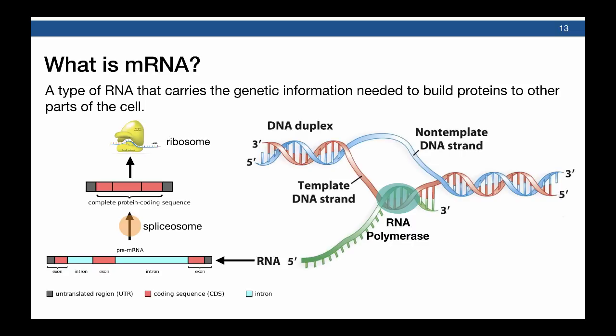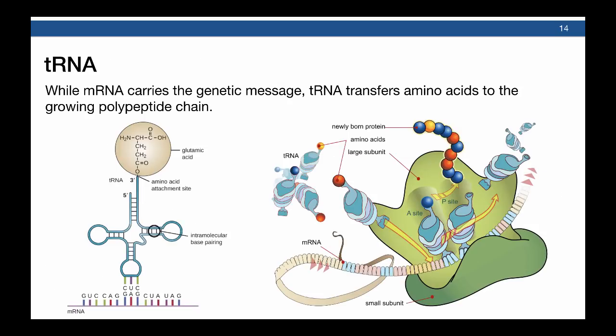This mature messenger RNA then needs to make its way to the ribosome for translation. If you are a eukaryote, the messenger RNA leaves the nucleus through one of the nuclear pores and enters the cytosol. If you are a prokaryote, the messenger RNA moves directly to the ribosome.